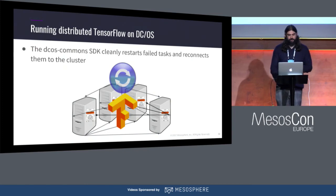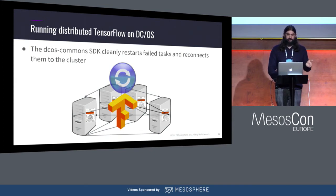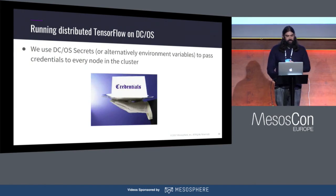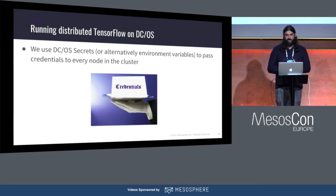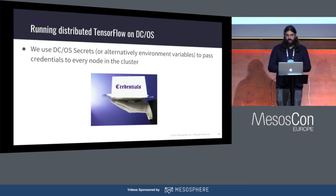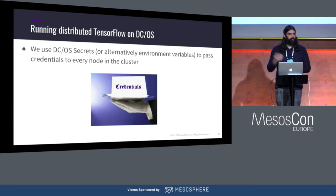Because we're running with the DCOS Commons SDK, we have the ability to cleanly restart any failed tasks and reconnect them to the cluster if something goes wrong. In a traditional setting, you'd have to notice the failure yourself and restart jobs manually — here the SDK restarts them for you. For credentials, you don't have to authenticate onto each individual machine. Instead, you can use our integrated DCOS Secrets service to store secrets beforehand, and every service has those available. I actually used this in the example, storing Google service account credentials as a secret so the TensorFlow application could write its output to the Google storage bucket.